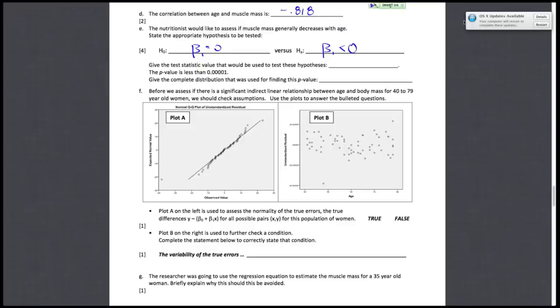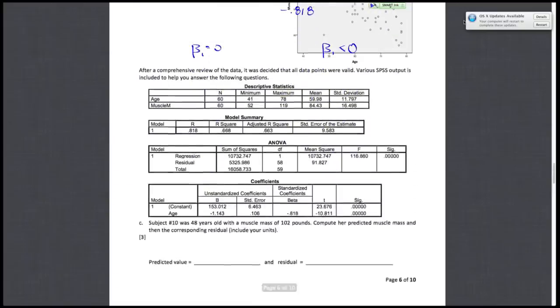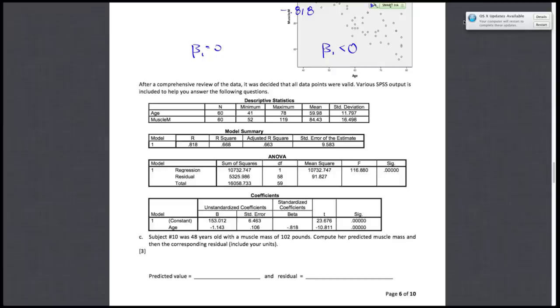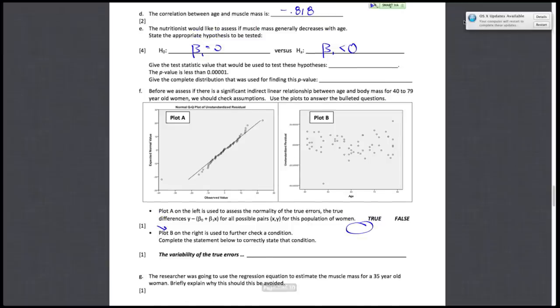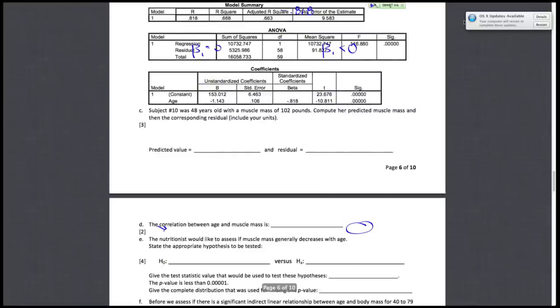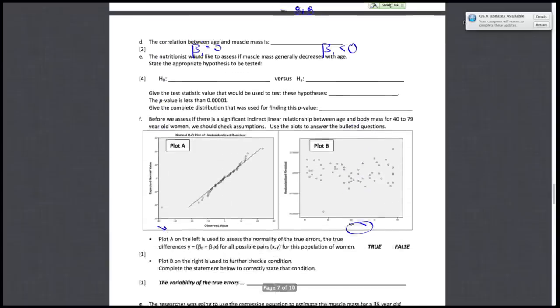Give the test statistic value that would be used to test these hypotheses. The P value is less than 0.0001. Because we have a one-tailed test, we can't use the F statistic. So if I scroll back up to my output, here's my coefficients. And on the age variable, let me see if I can get this back in the right spot. So the test statistic value, on our age, it was negative 10.811.